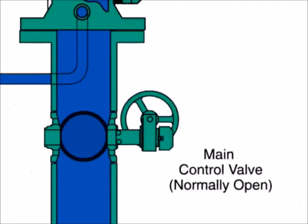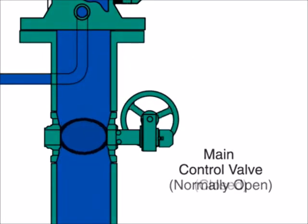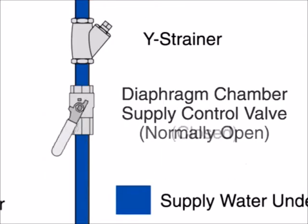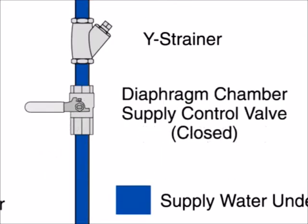To reset the valve after the fire is under control, the main supply valve is manually closed to shut off the water supply and the diaphragm chamber supply valve is also closed.